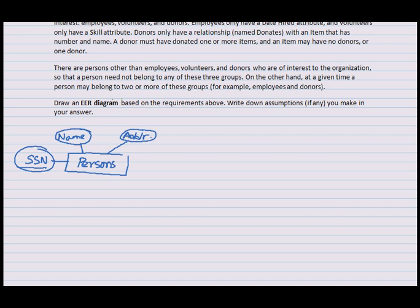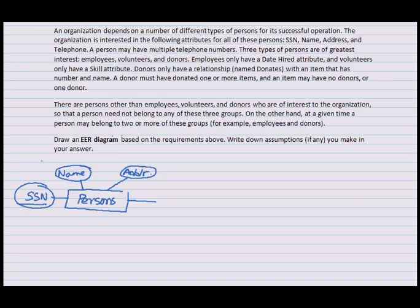In the telephone number one, a person may have multiple telephone numbers, which suggests that this is a multi-valued attribute. Because it said it's multiple, a person may have multiple telephone numbers. All right, so a person may.